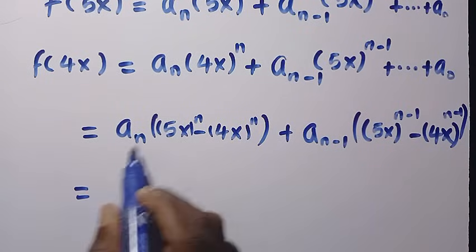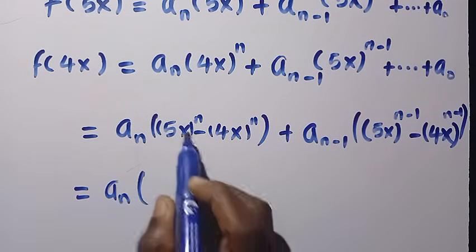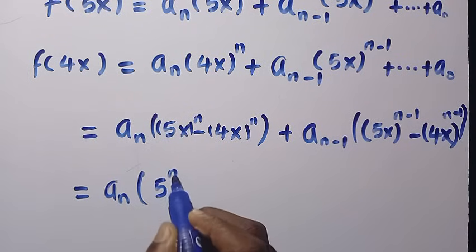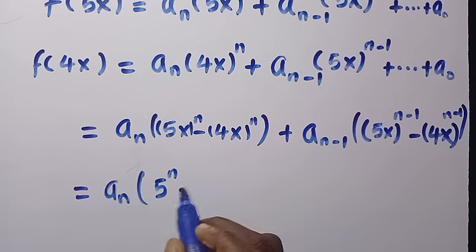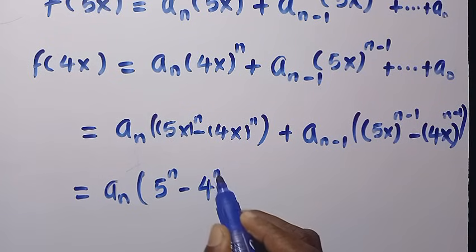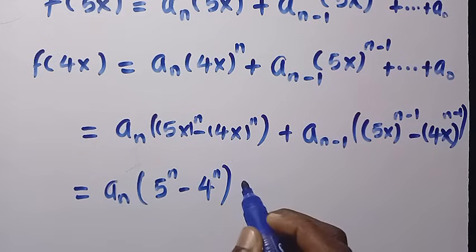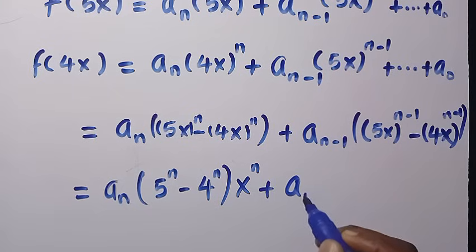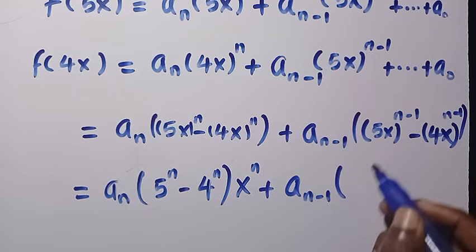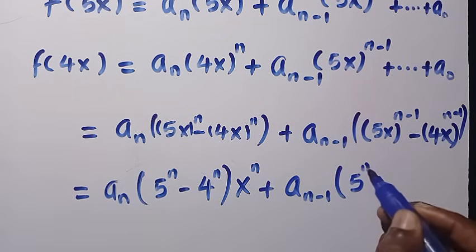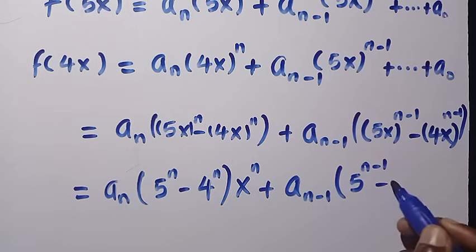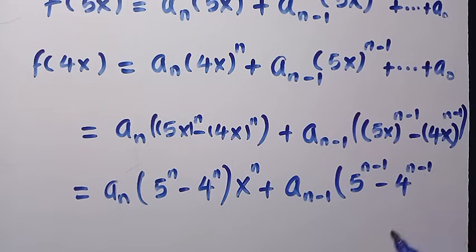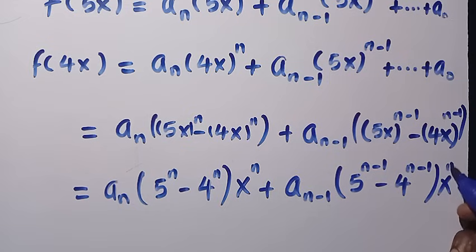Applying the exponent rule, 5 takes the power of n and 4 takes the power of n, and x^n is factored out. So we have: a_n (5^n minus 4^n) x^n plus a_{n-1} (5^{n-1} minus 4^{n-1}) x^{n-1}, and so on.